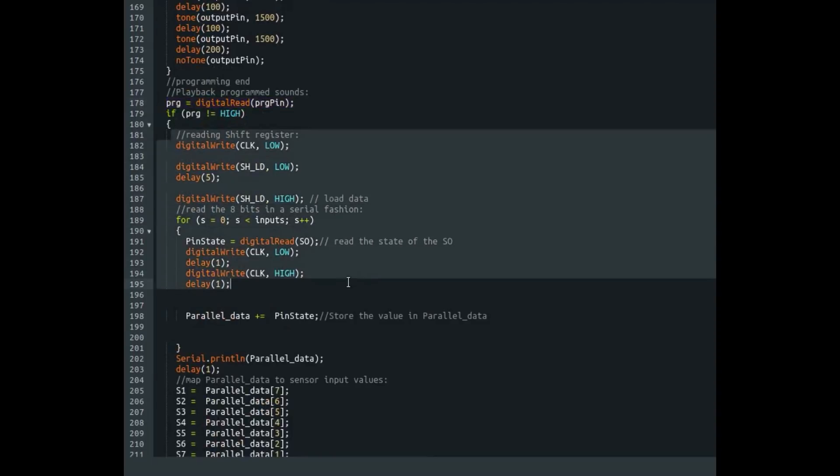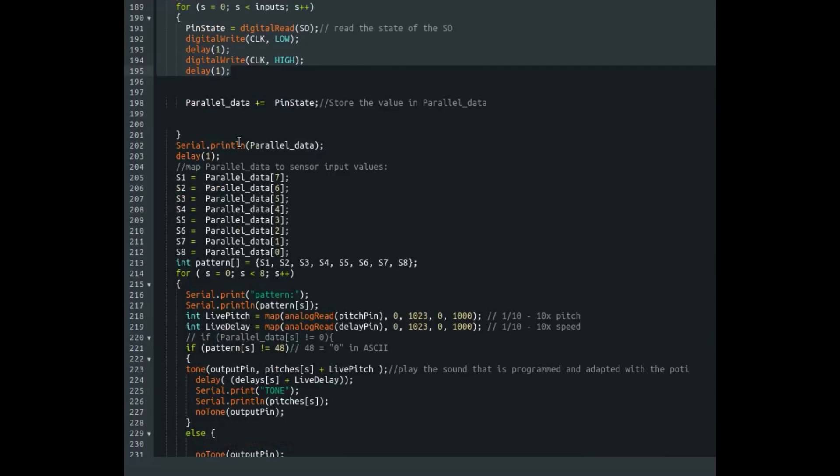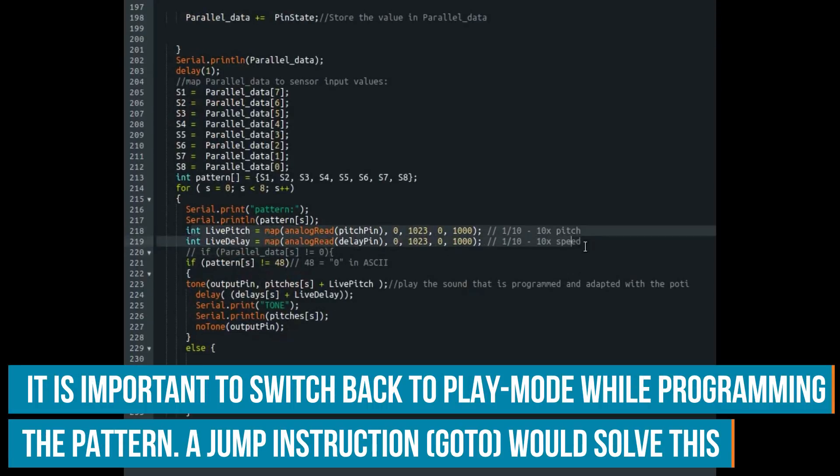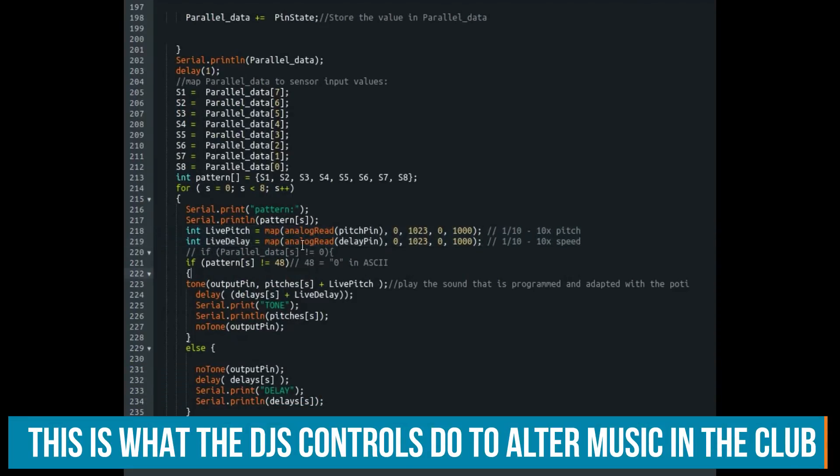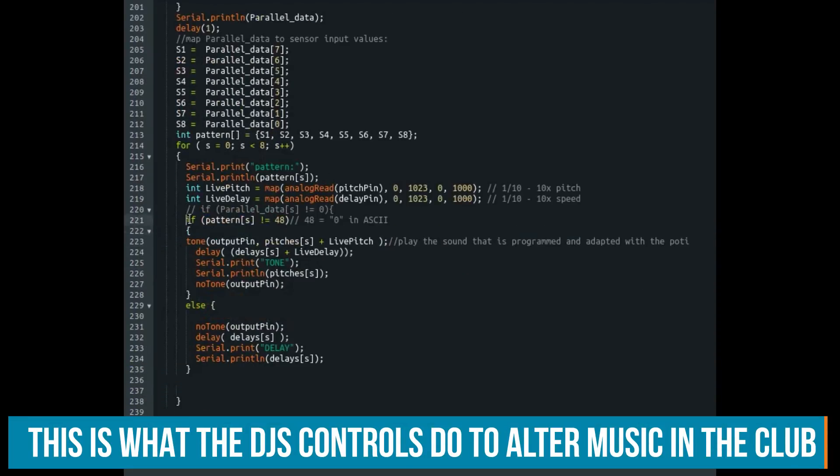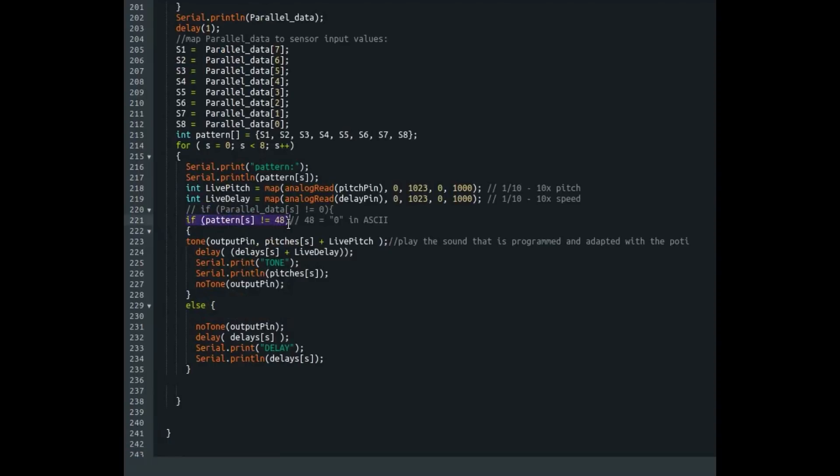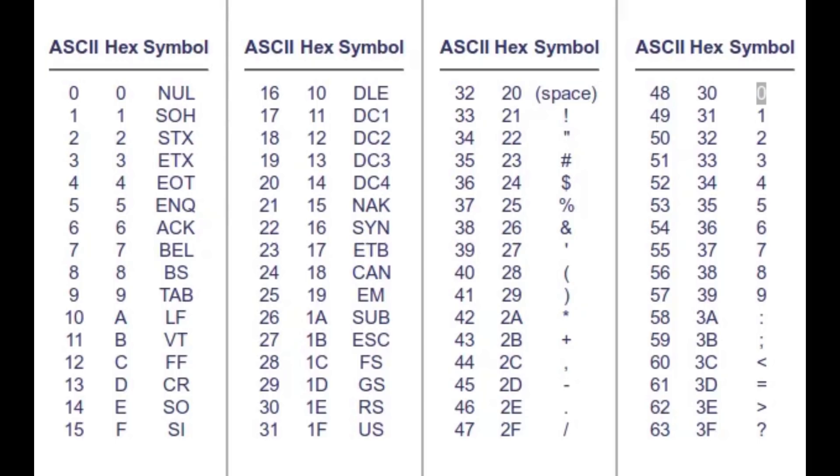The playback mode also reads the shift registers again, and it also reads the analog potentiometers and give it the function live pitch and live delay. So when you play that back, it first checks if that pattern means that this note is active. It checks for a 48, because 48 is a zero in ASCII, and we save these values as strings. So they are looking for the exact representation and not the number zero. They look for a zero symbol. So it's 48, 49 would be one.